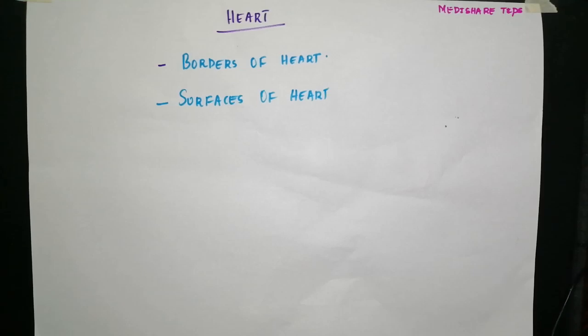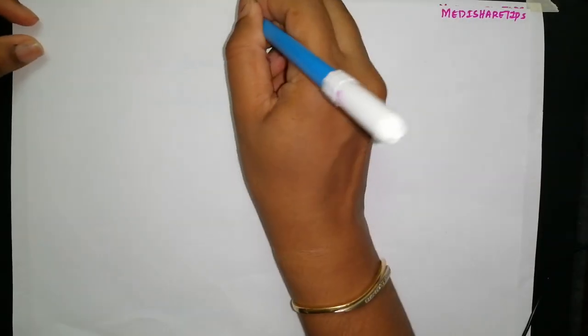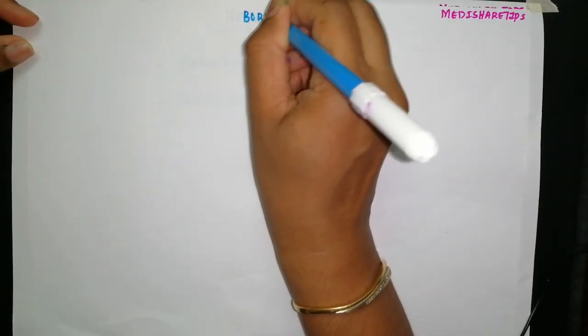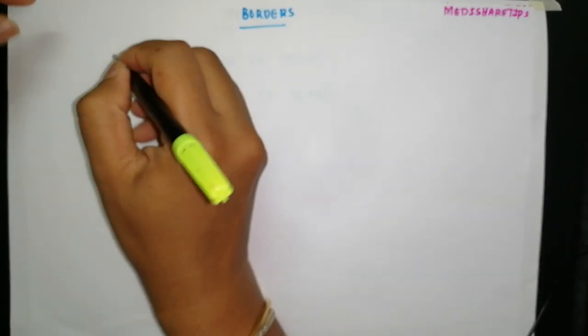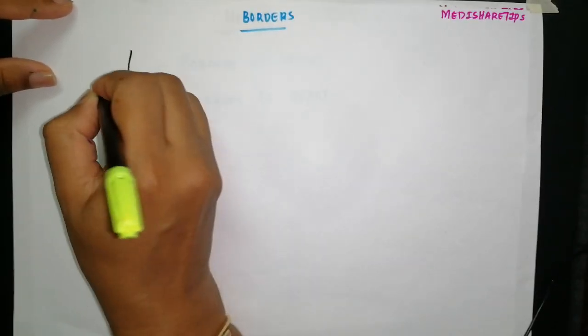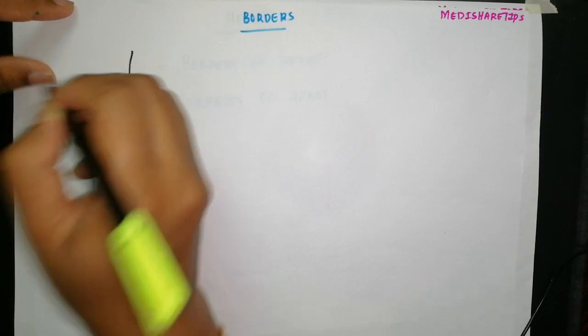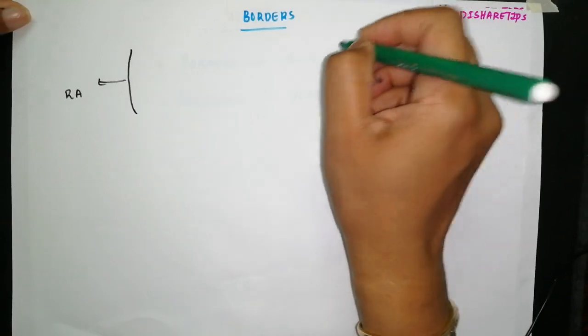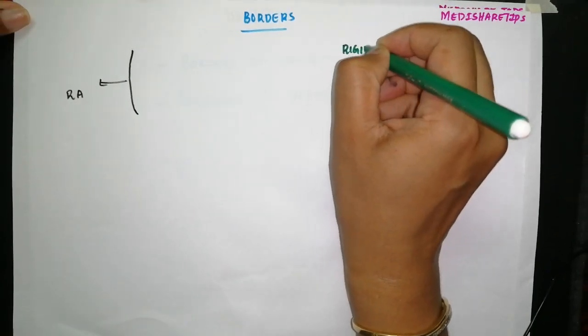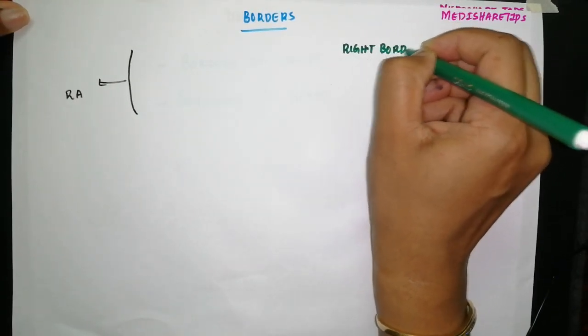In this video we will be discussing the borders and surfaces of the heart. First, we will discuss the borders of the heart, drawing them one by one. The right border is formed by the right atrium.